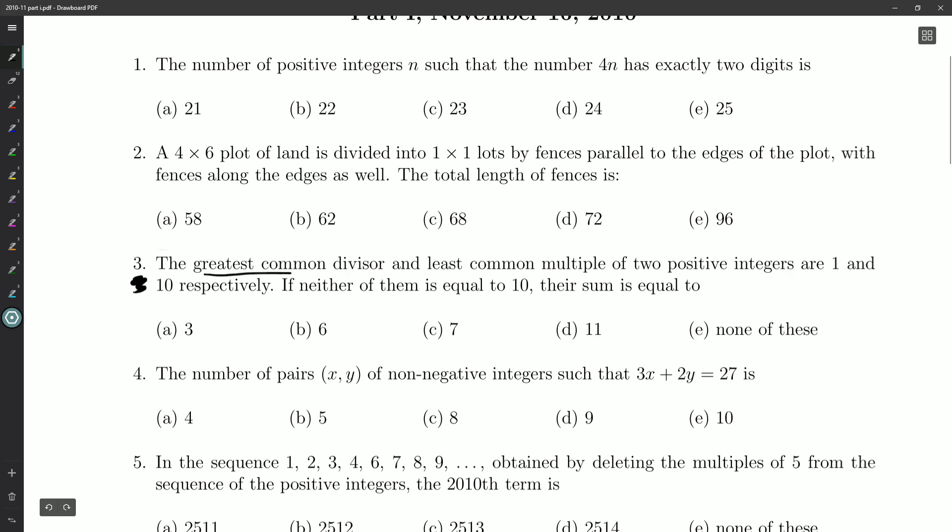And question three says, the greatest common divisor and the least common multiple of two positive integers are one and ten, respectively. If neither of them is equal to ten, their sum is equal to...